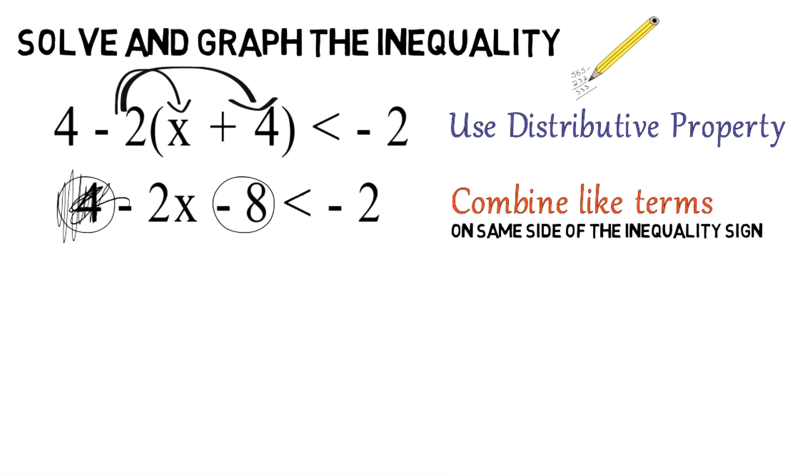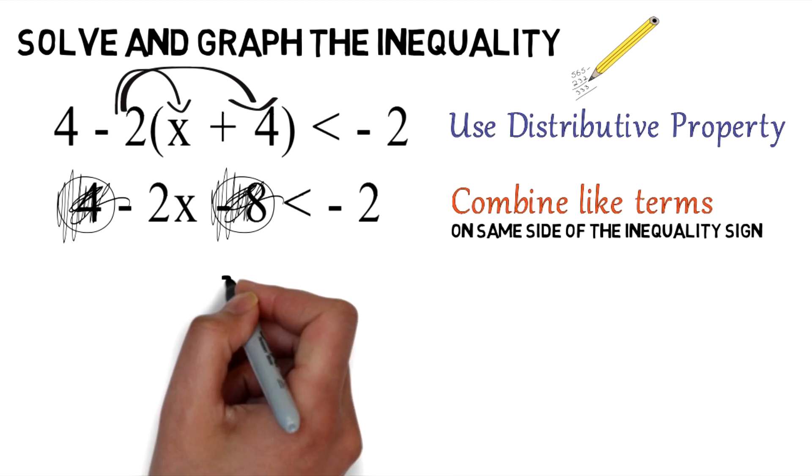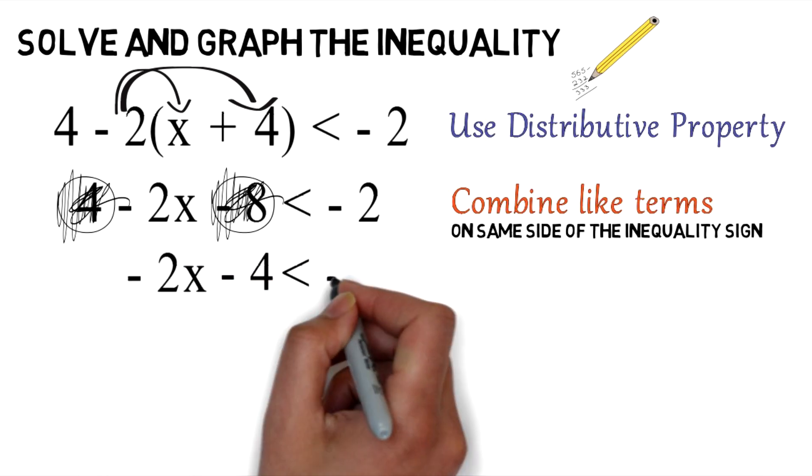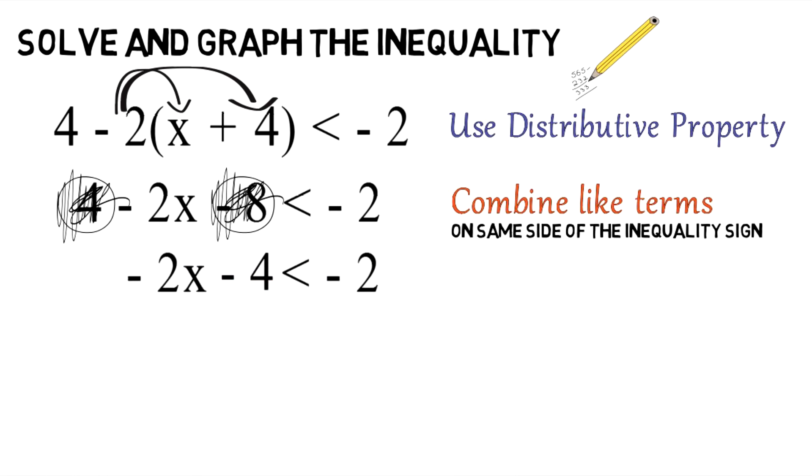4 plus negative 8. When you add 4 plus negative 8, you wind up getting negative 4, and you're ultimately left with negative 2x minus 4 is less than negative 2.